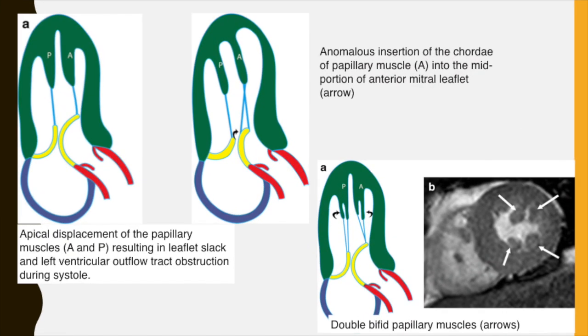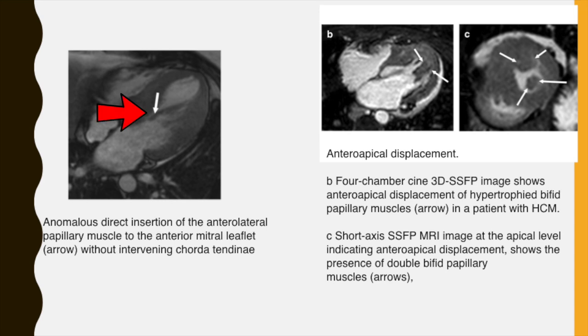Other anomalies of the subvalvular apparatus are illustrated in this slide. Figure A shows an apical displacement of the papillary muscle resulting in leaflet slack and left ventricular outflow tract obstruction during systole. The adjacent image shows an anomalous insertion of the chordae of the papillary muscle in the mid portion of the anterior mitral leaflet. The lower right image shows double bifid papillary muscles as an illustration and a CMR image. The image on the left shows an anomalous direct insertion of the anterolateral papillary muscle to the anterior mitral leaflet without an intervening chordae tendineae in a patient with HCM. The upper right shows anteroapical displacement of a papillary muscle with double bifid morphology.